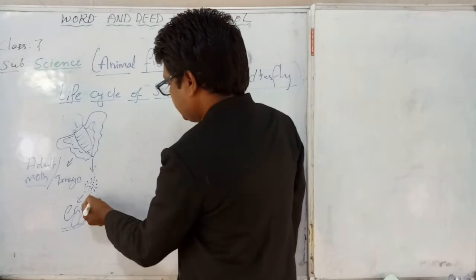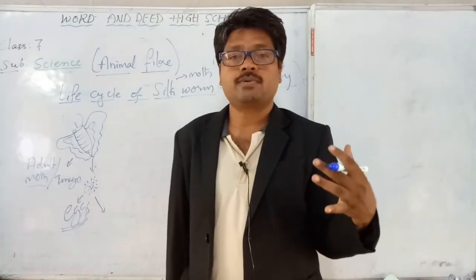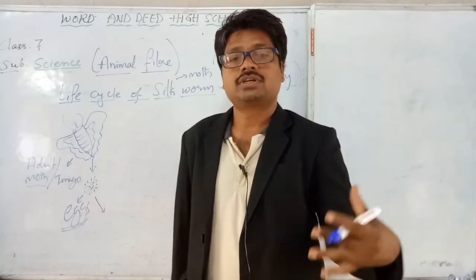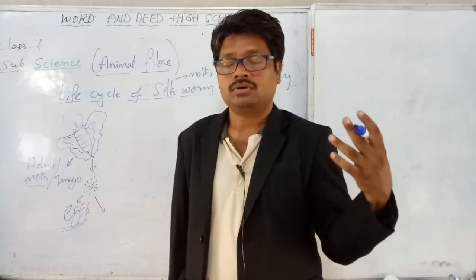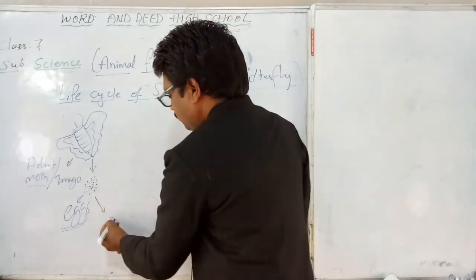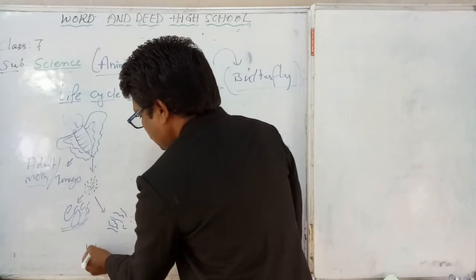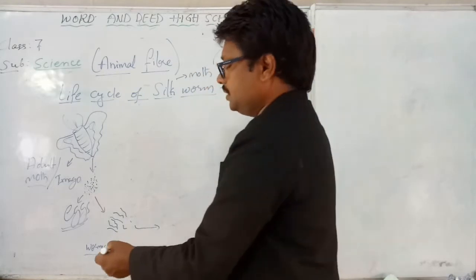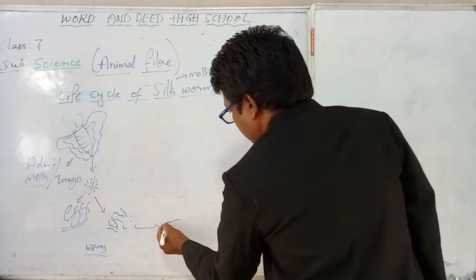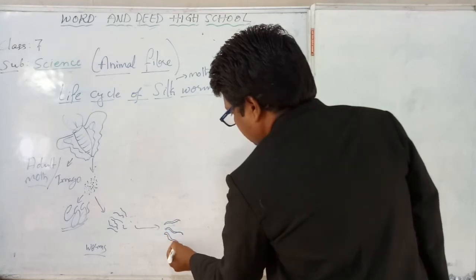Next, the eggs are incubated and a suitable environment is provided for them to hatch. After some time, when the eggs are hatched, worms come out. These worms slowly increase their body size by eating mulberry leaves.